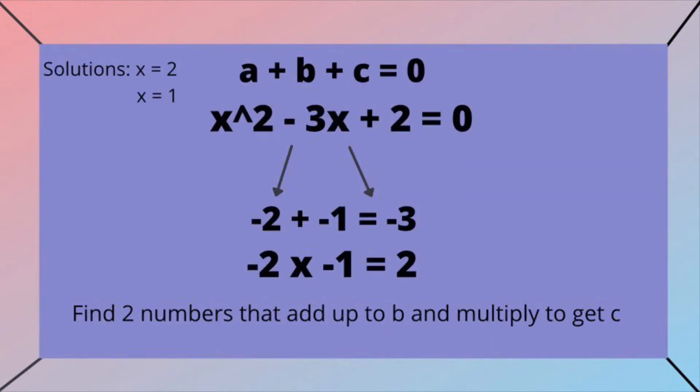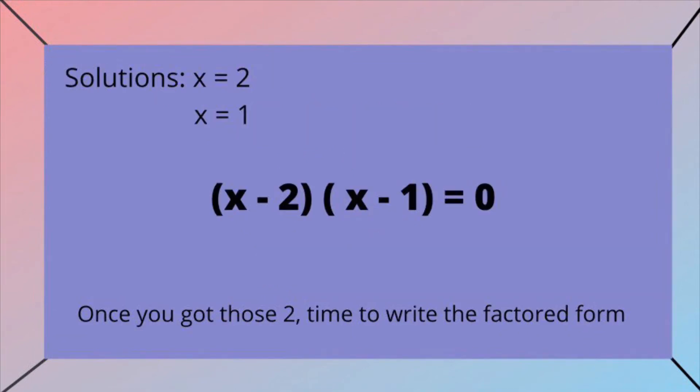Find two numbers that add up to B and multiply to get C. Once you've got those two,